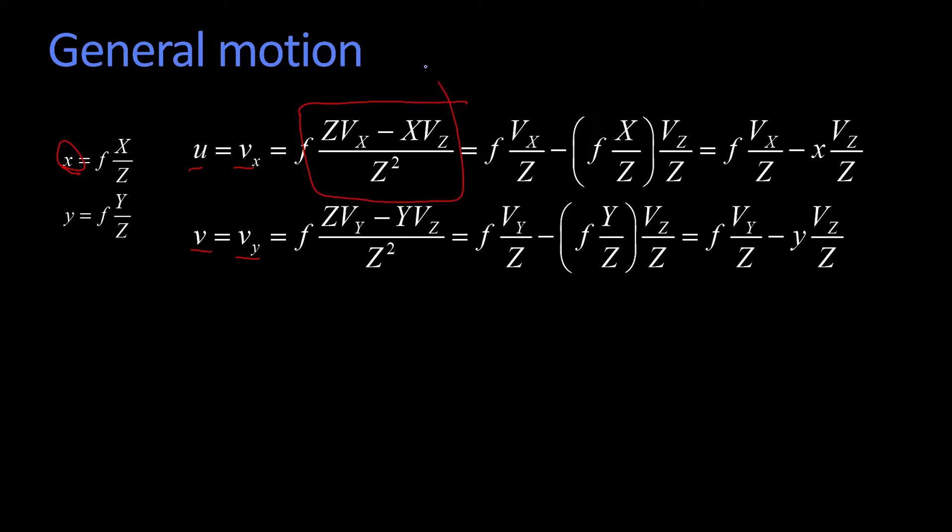Vx, that's the velocity in x times z minus the top x times the velocity in z, divided by z squared, multiplied by f, that's just a constant. Same thing down below.